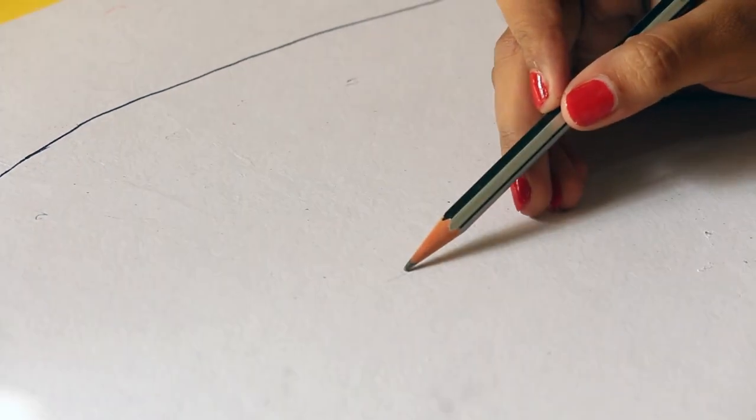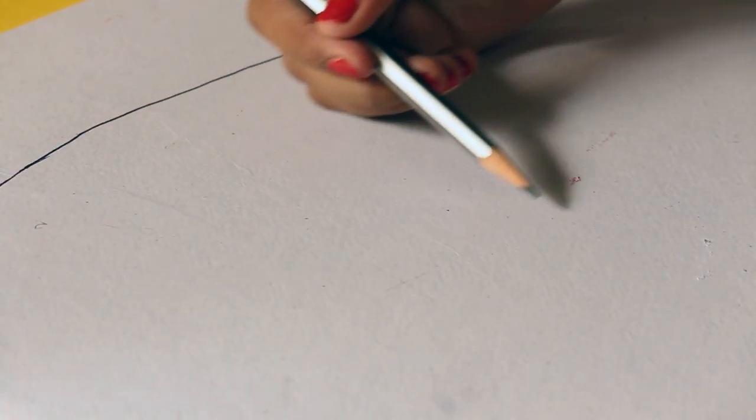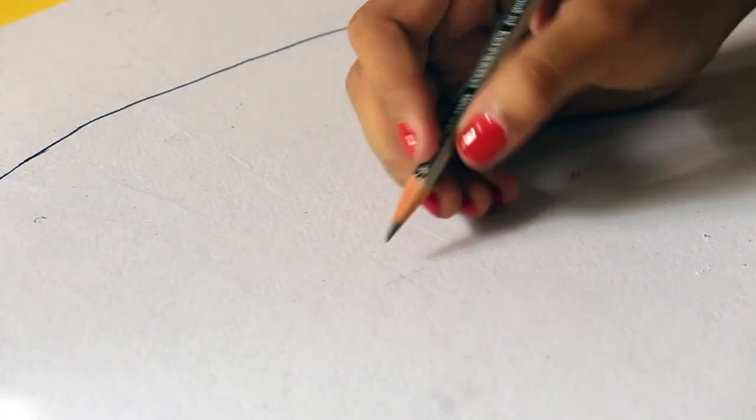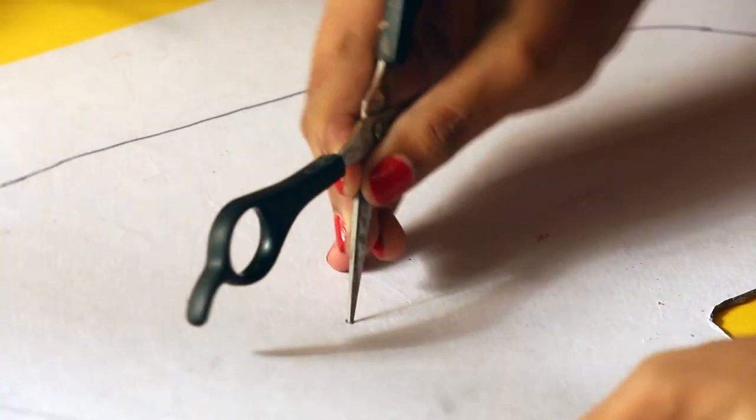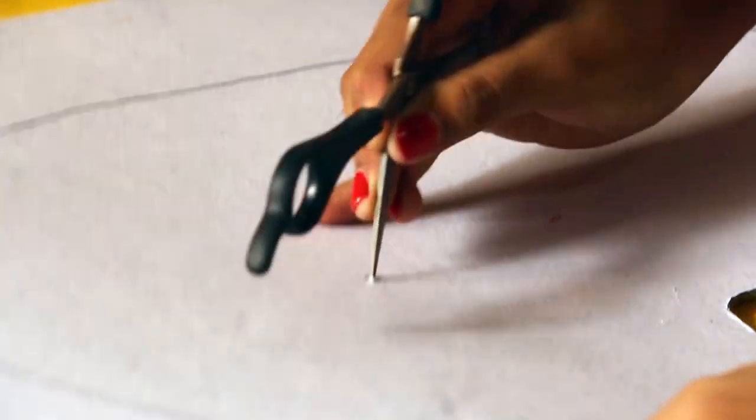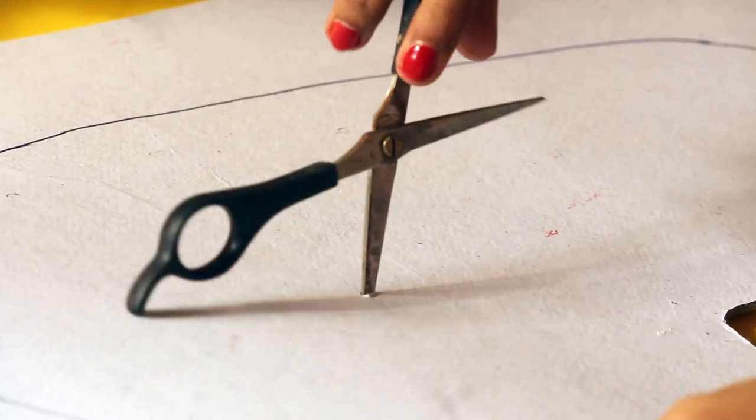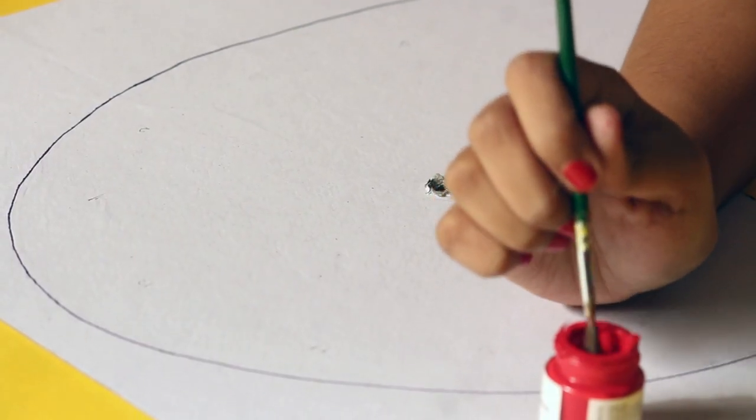Next, determine the center of your palette where you will poke a hole for the clock machine screw. For the hole again, use scissors initially and then make the hole wider by using a pencil or a pen. You have to make the hole the size of the screw.